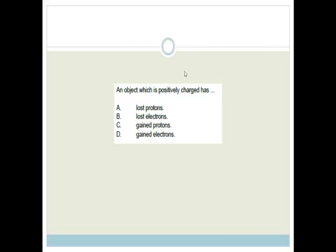Moving on. An object which is positively charged has. So when we're talking about charges, what are the only charges that move? Are they protons or electrons? Well, we know that the only charges that move are electrons. Protons are stuck in the nucleus. So it cannot be that they lost protons or gained protons. Now we need to think about the electrons. Electrons are negatively charged. So, if we lose them, then what do we become? We become positively charged. So the correct answer has to be B.